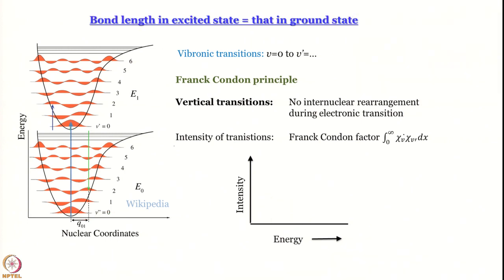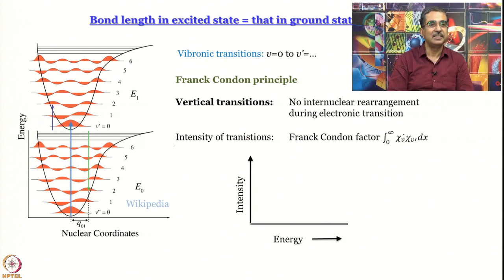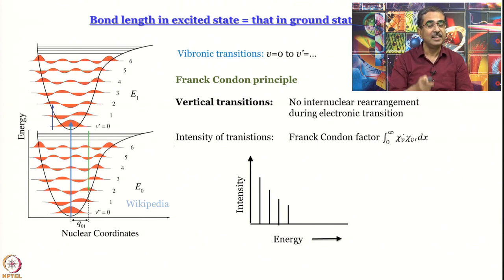Now let us consider the situation where the bond length in the excited state equals that in the ground state. Obviously the transition with the largest Frank-Condon factor will be the 0→0' transition. As you go higher in energy, the vibronic lines become smaller and smaller in intensity. This is the situation for naphthacene — that is the spectrum we have seen in the previous module.